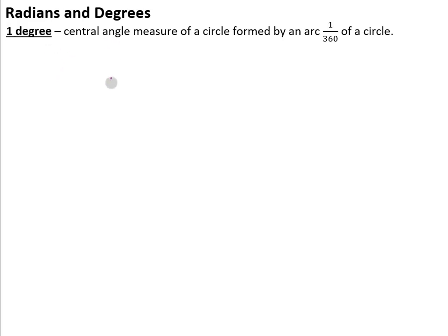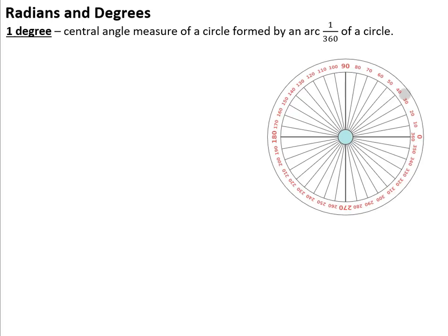So what is 1 degree? To define it, 1 degree is the central angle measure of a circle formed by an arc 1/360th of a circle. What that means is we basically took the circle and divided it into 360 equal parts.